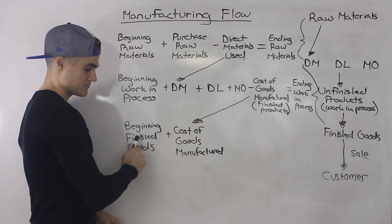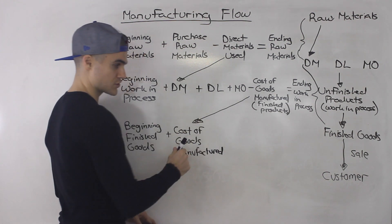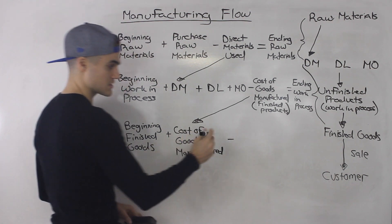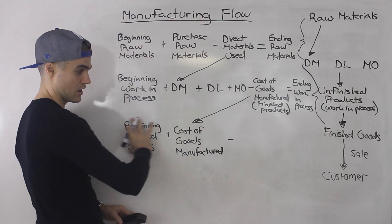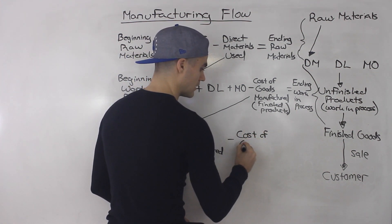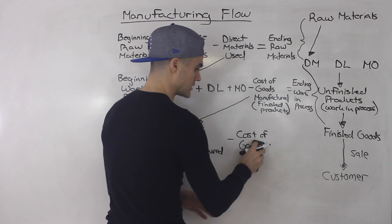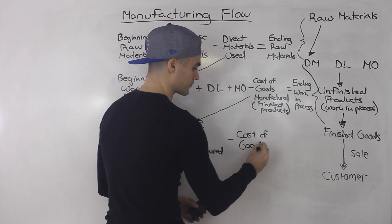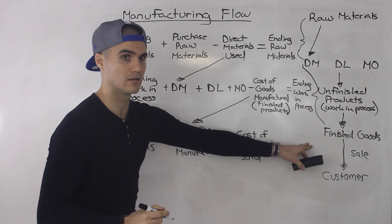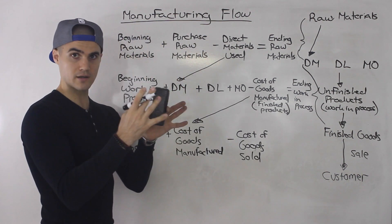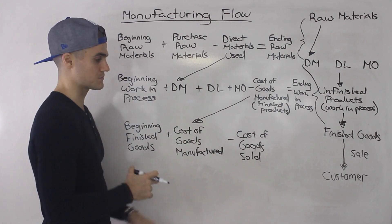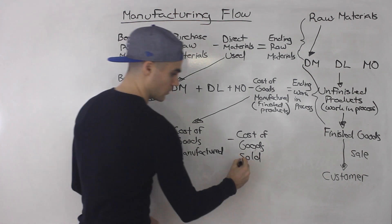You have some beginning finished goods, you're adding more finished goods, you have them all in stock, and then some of those you're going to sell. Those that are sold come out of stock — that's your cost of goods sold. I mentioned in the product cost and period cost video that when there's a sale, those products on the balance sheet in inventory become cost of goods sold and flow onto the income statement. So this happens when there's a sale.